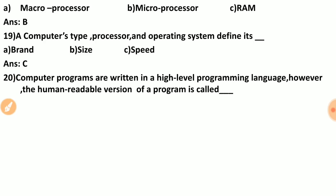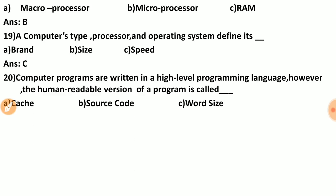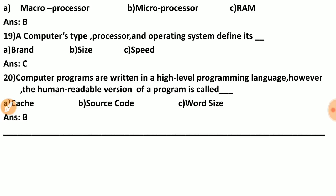Last question: computer programs are written in a high-level programming language. However, the human-readable version of a program is called dash. Options are: cache, source code, website. The correct answer is source code. The human-readable version of a program written in a high-level language is called source code.